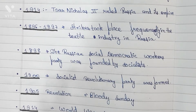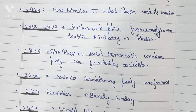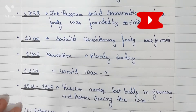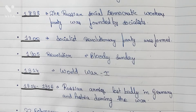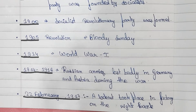1898: the Russian Social Democratic Workers Party was formed by the socialists. 1900: the Socialist Revolutionary Party was formed. 1905: the revolution was the Bloody Sunday. 1914: beginning of World War One. 1914 to 1916: Russian armies lost badly in Germany and Austria during the war.